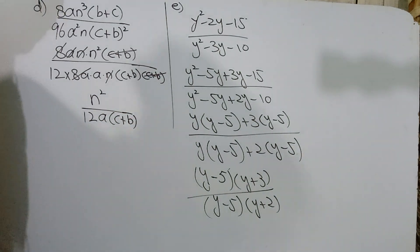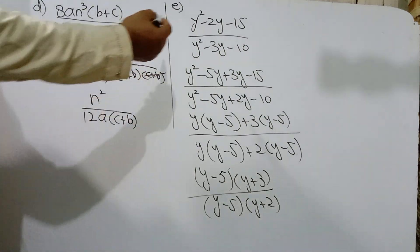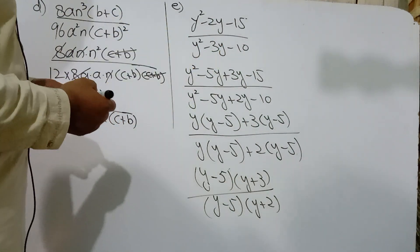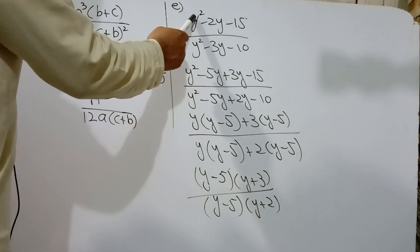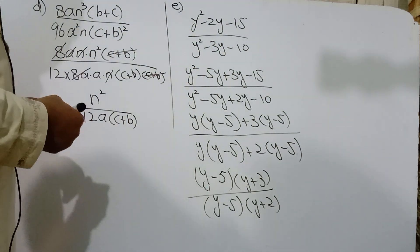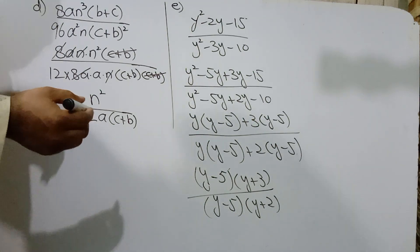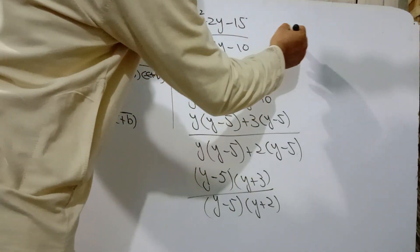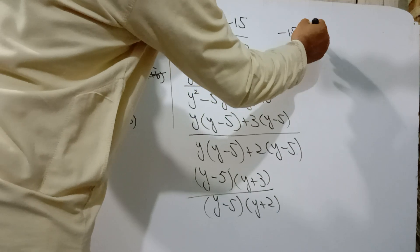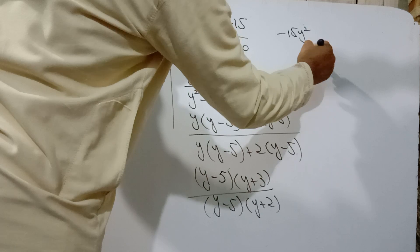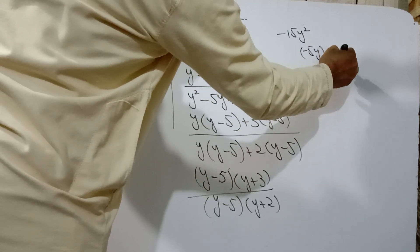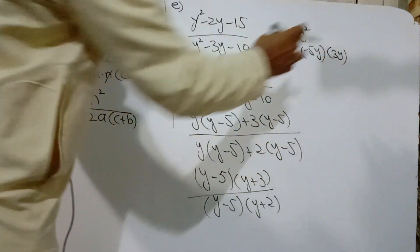Similarly part E. y² - 2y - 15 over y² - 3y - 10. 15 y². If we make a factor 5y minus 10, 3y.